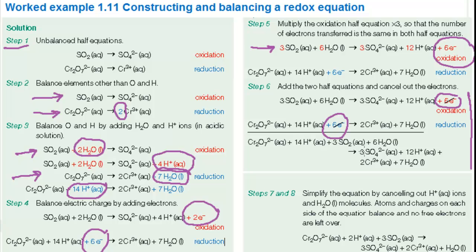The last step is to simplify the equation if necessary by checking the number of H plus ions and water molecules on each side. 14 H plus on the left, 12 H plus on the right simplifies to 2 H plus on the left. 6 H2O on the left, 7 H2O on the right simplifies to just one molecule of water on the right.